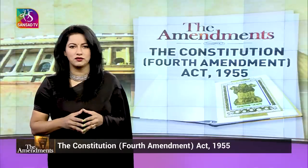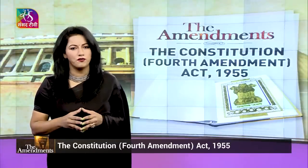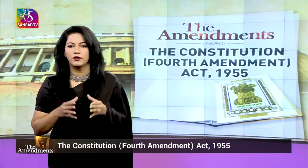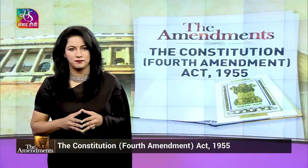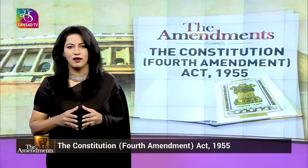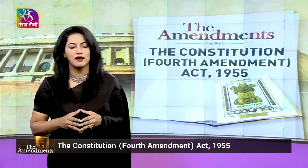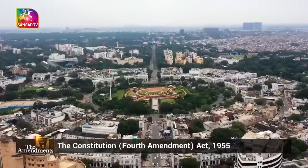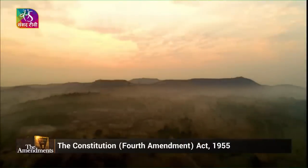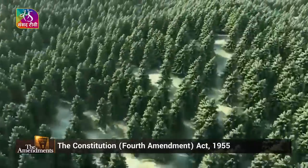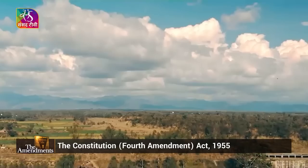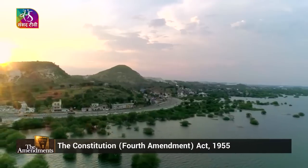The Constitution lays down the structure and defines, delimits and demarcates the role and functions of every organ of the state, including the judiciary, and establishes norms for their interrelationships, checks and balances. The doctrine of separation of power implies that each pillar of democracy — the executive, legislature and judiciary — perform separate functions and act as separate entities. A state is defined as a community of persons permanently occupying a definite territory, legally independent of external control, and possessing an organized government which will create and administer law over all persons and groups within its jurisdiction.